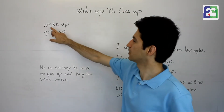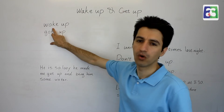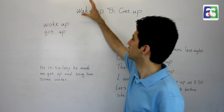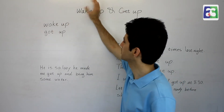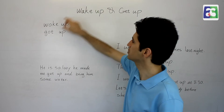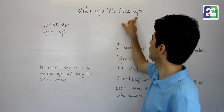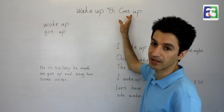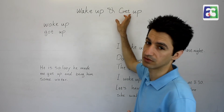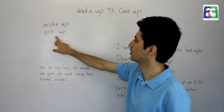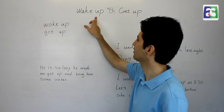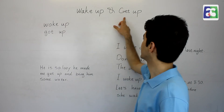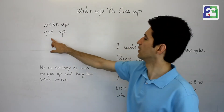Wake up — the past tense is woke up. It's an irregular verb. And get up — that's also irregular — the past tense is got up. So: wake up, woke up; get up, got up.